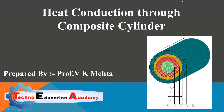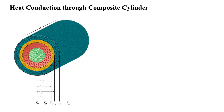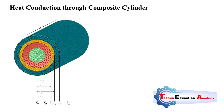Hello friends, welcome back to my channel Techno Education Academy. In this video lecture, we will derive the equation of heat conduction through a composite cylinder. First of all, what is a composite cylinder? A composite cylinder means a cylinder which is made by more than one layer — it is called a composite cylinder.